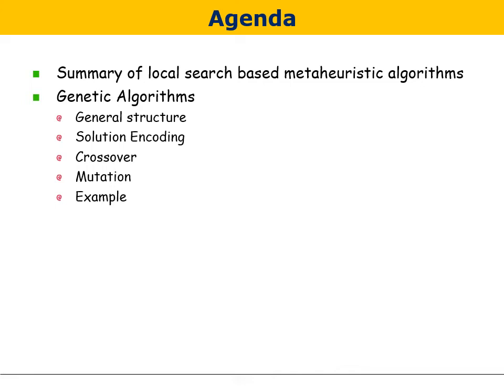Hello all. In this lecture, we will learn about genetic algorithms, which is another widely used metaheuristic algorithm with a different structure than local search-based algorithms like tabu search and simulated annealing. We will see a summary of local search-based metaheuristic algorithms, their main advantages and disadvantages, and then start learning genetic algorithms: their general structure, how to encode solutions, crossover and mutation operators, and some examples.